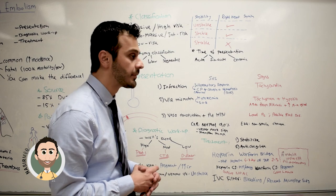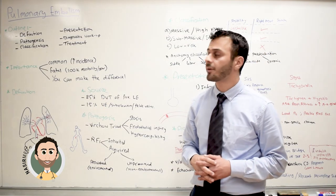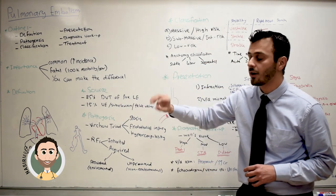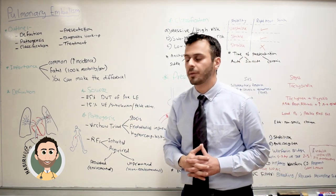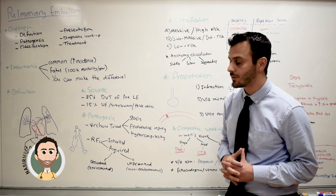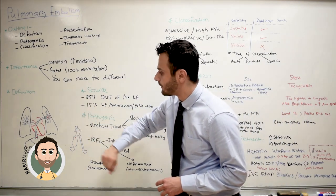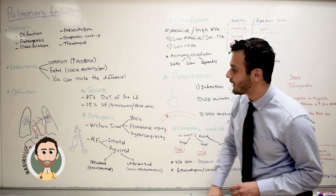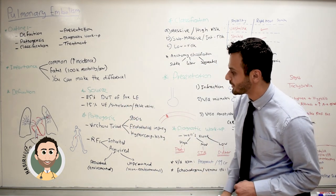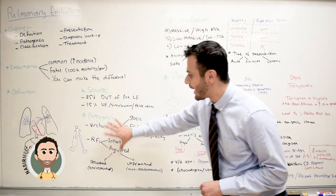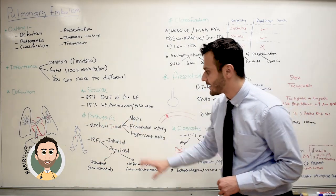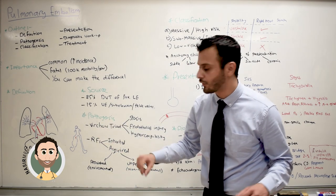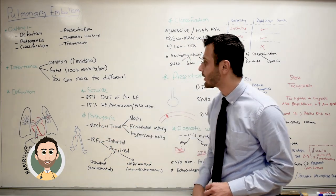That is it for pulmonary embolism. To summarize this video: we talked about the importance of pulmonary embolism and how important it is to treat it immediately. We also talked about how pulmonary embolism most likely originates from a DVT of the proximal lower extremity, and then the pathogenesis of this disease — summarized by the Virchow's triad.